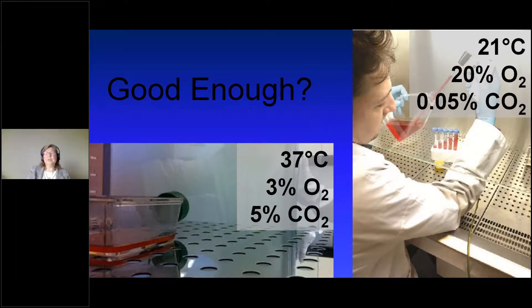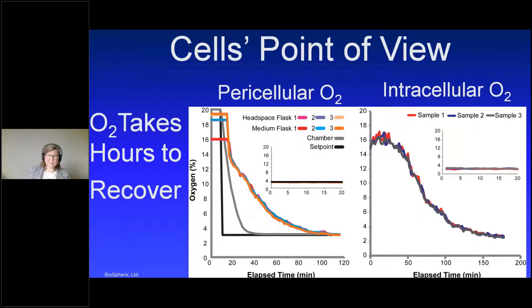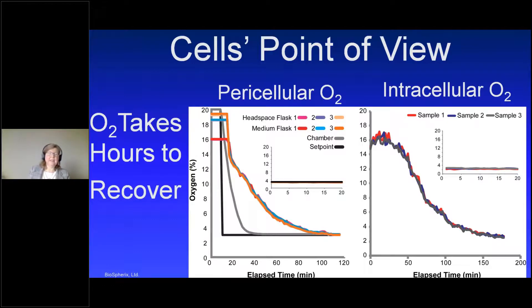This is data we generated showing what happens at the pericellular oxygen level — in the medium when cells are subjected to a quick medium change in room air oxygen. It takes almost two hours for those cells to get back to 3% oxygen after a quick room air medium change, and it takes almost three hours for the intracellular oxygen to return to 3%. The inset graphs show what happens with full-time control of conditions — the cells have full-time optimal conditions, never out of optimum. When cells are out of optimum for hours, this is an eternity for a cell.